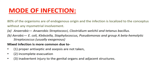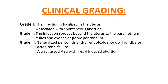The increased chance of sepsis in illegal induced abortion is due to improper antiseptic precautions, incomplete evacuation, and injury to genital organs and adjacent structures such as the bowel. There are 3 grades of septic abortion. Grade 1: infection is localized to the uterus and associated with spontaneous abortion. Grade 2: infection spreads beyond the uterus to the parametrium, tubes, ovaries, or pelvic peritoneum. Grade 3: generalized peritonitis, endotoxic shock, or acute renal failure — always associated with illegal induced abortion.